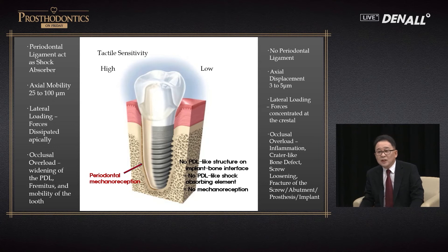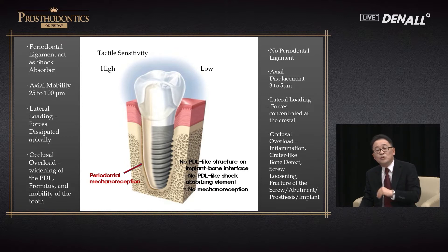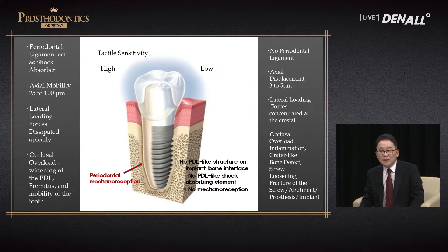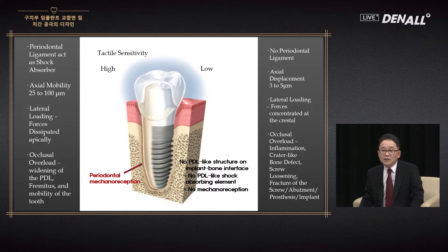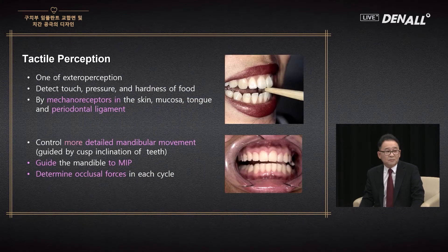The reason is well known — it is based on the difference between the implant and a natural tooth, that is the existence or lack of the PDL. In the PDL, as we know, there are mechanoreceptors. In the implant, there is nothing that can absorb shocks and no tissues that can control nerves, so all the force is transmitted to bone.